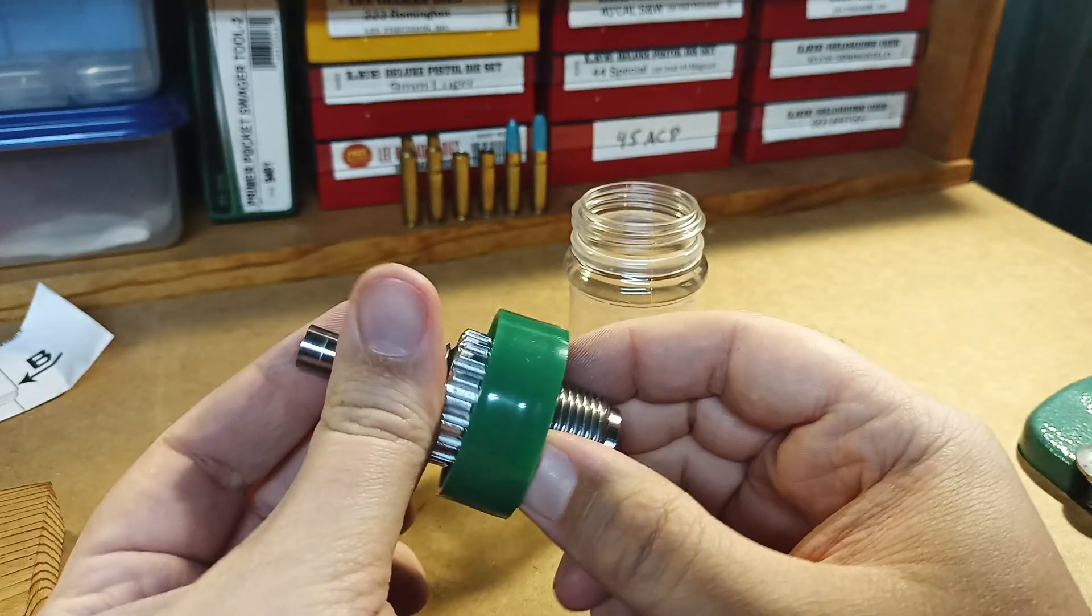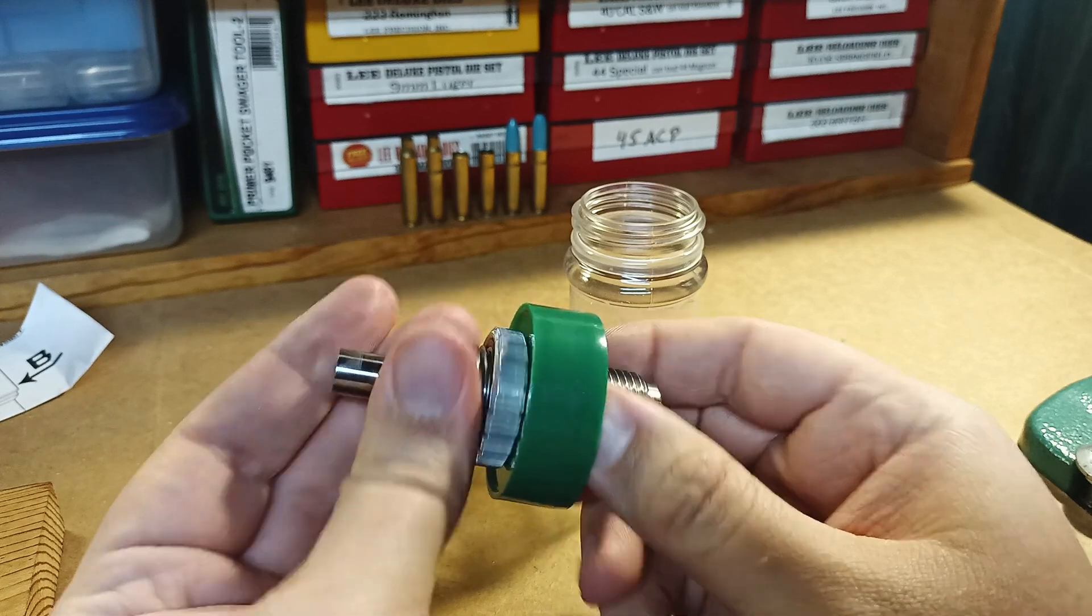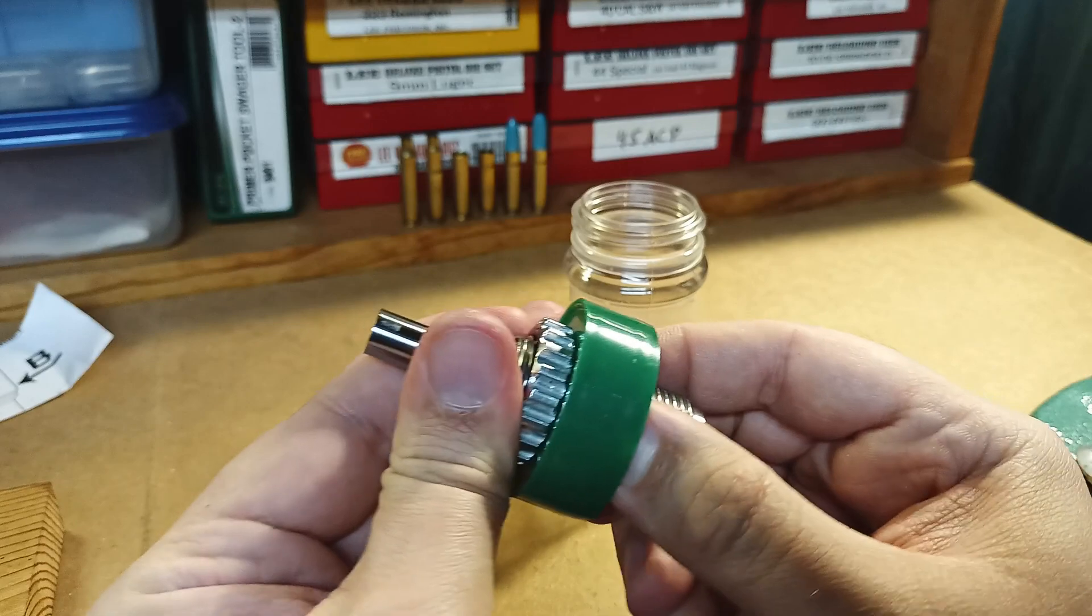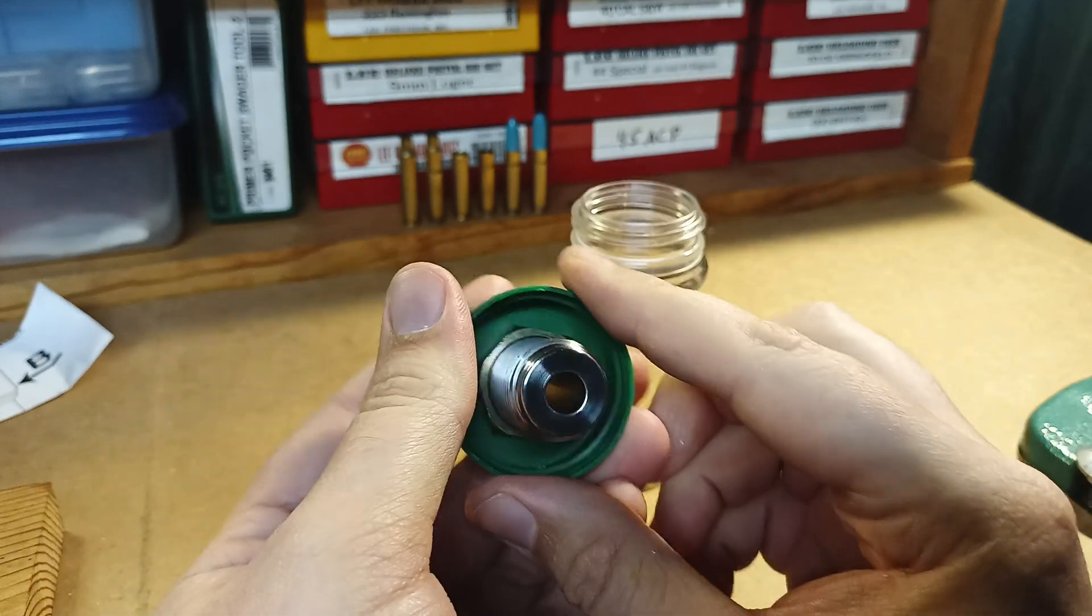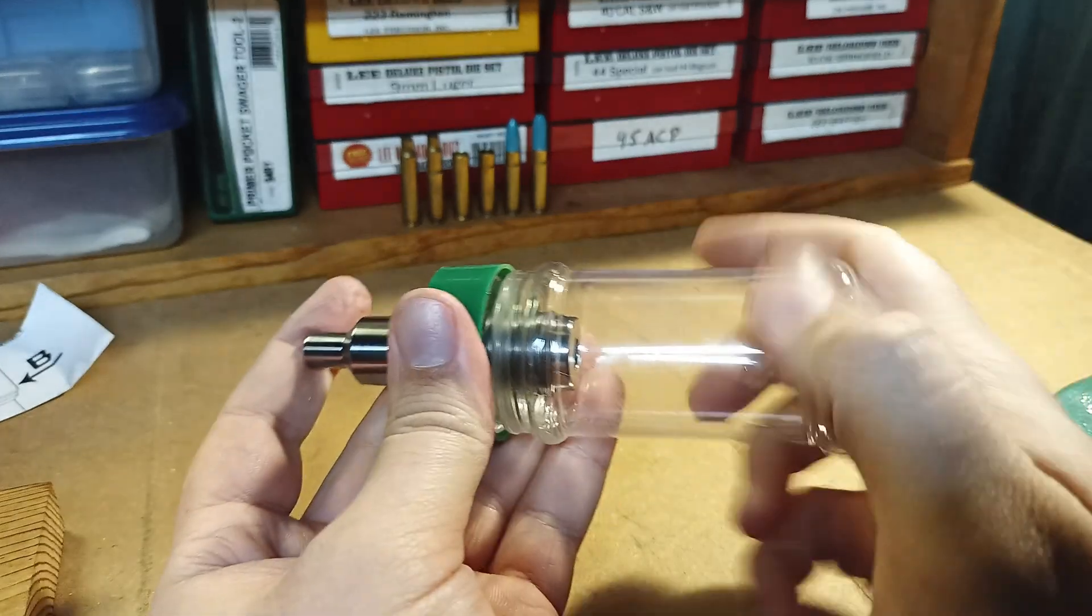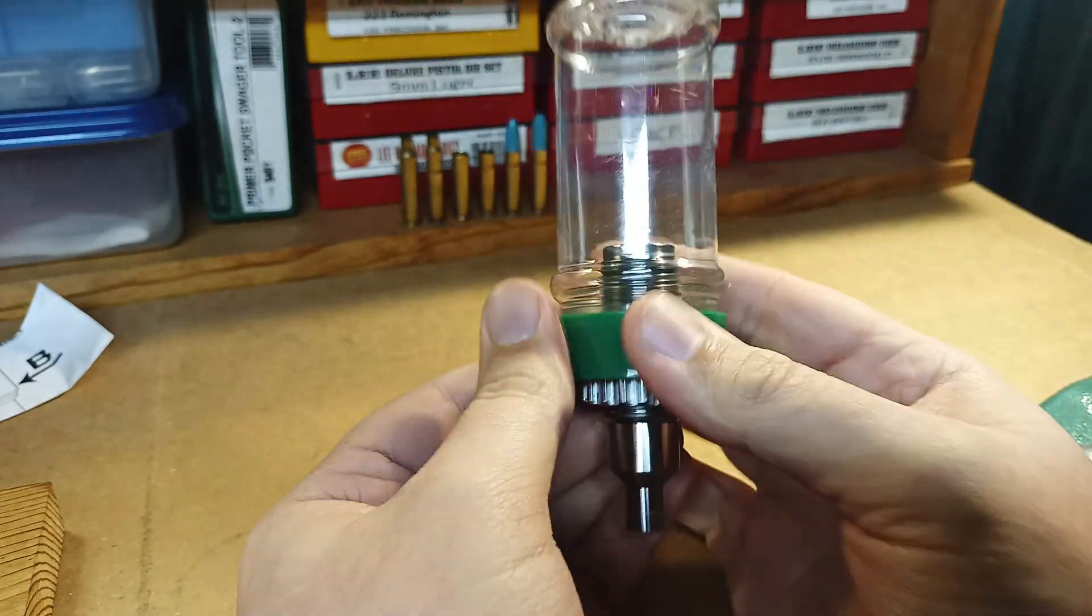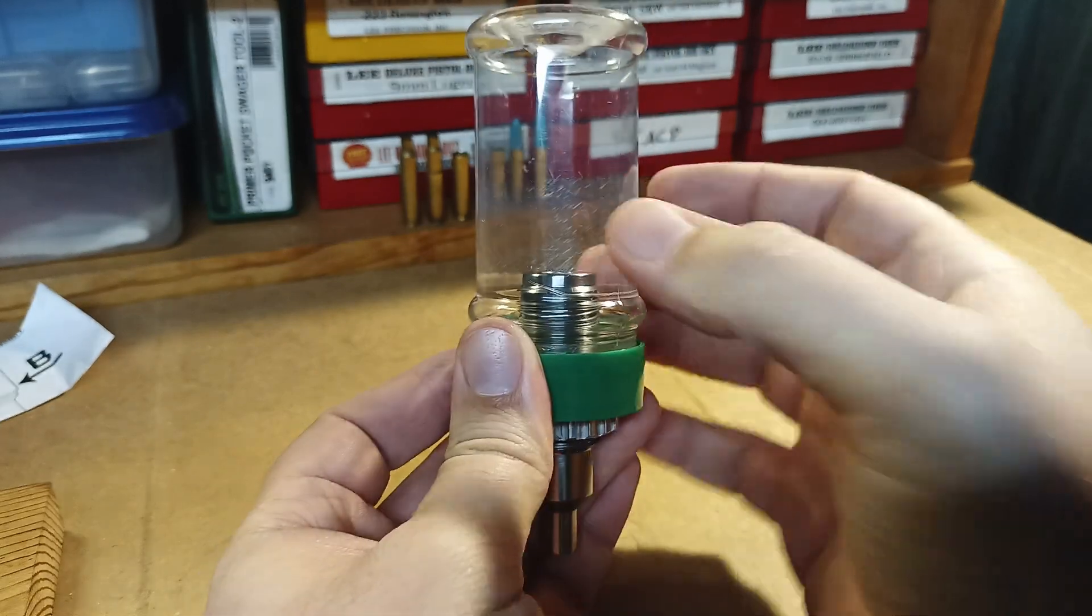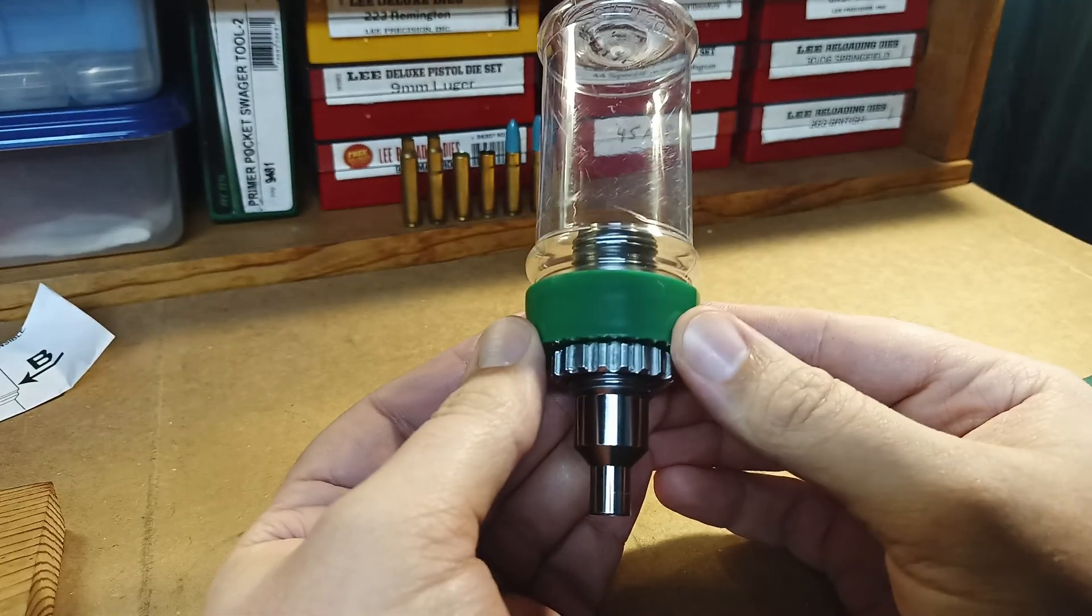Now, this does hold about 30 to 40 checks inside the die because this entire length of the die is hollow. So you have quite a bit of room there. So the container isn't necessary. But once you get going in a rhythm, you want to keep going rather than have to take one off the top every time or take the die out.